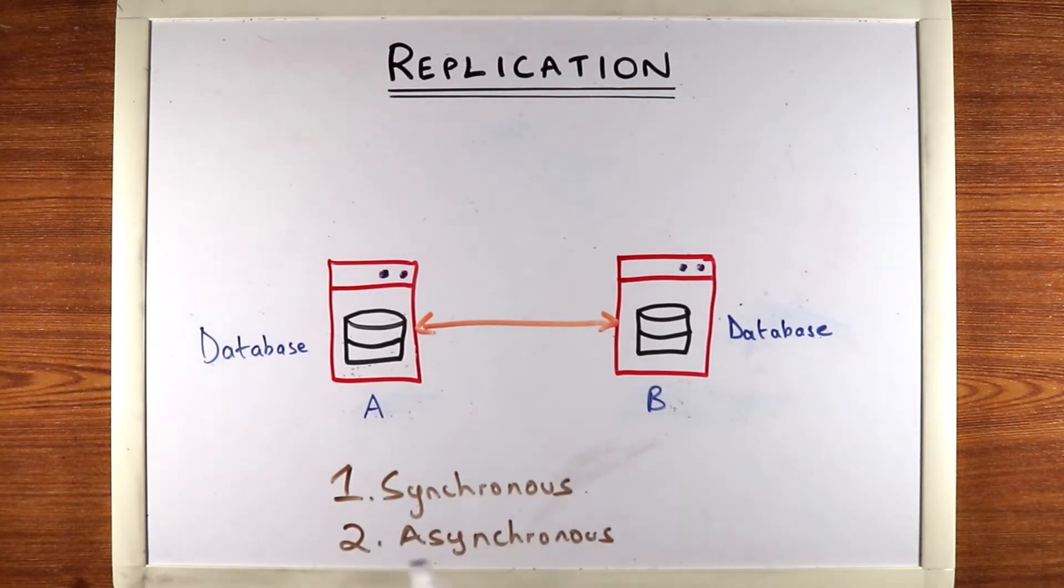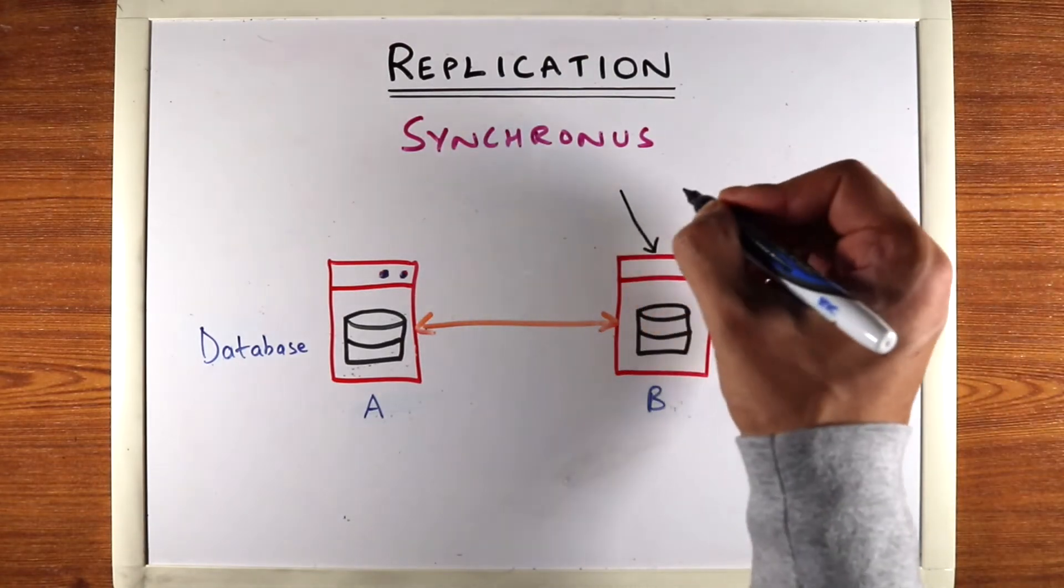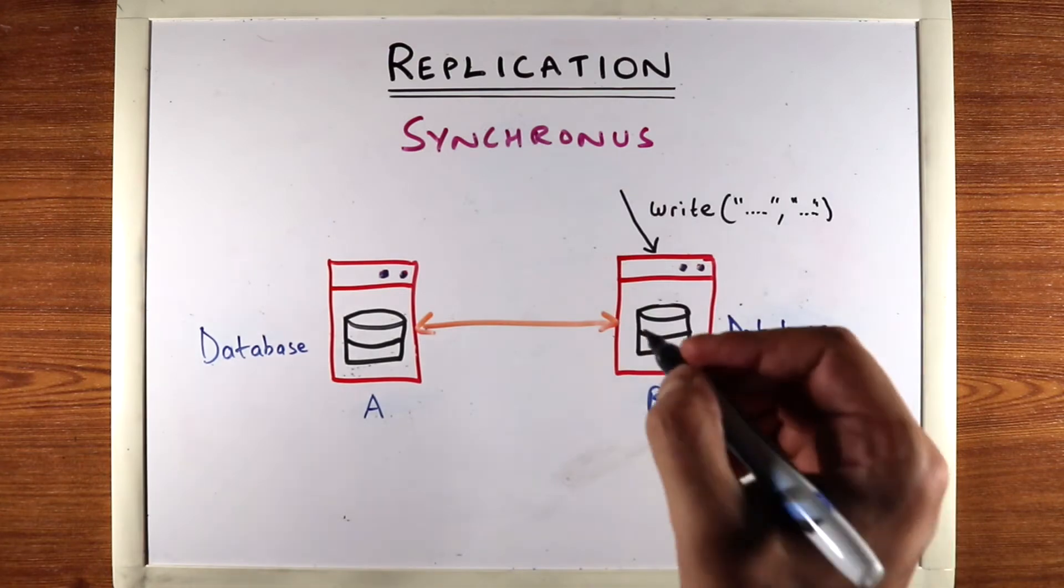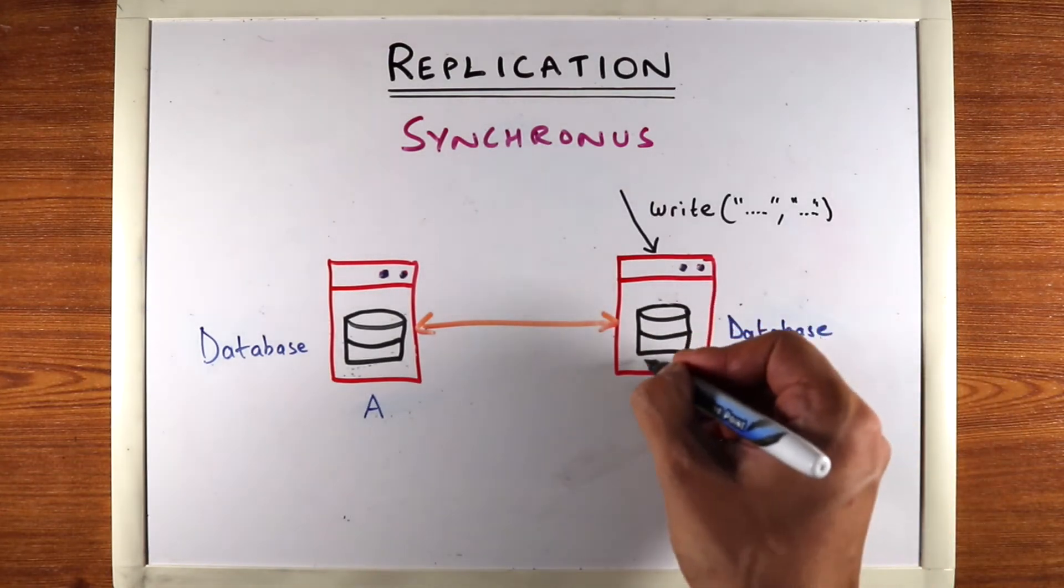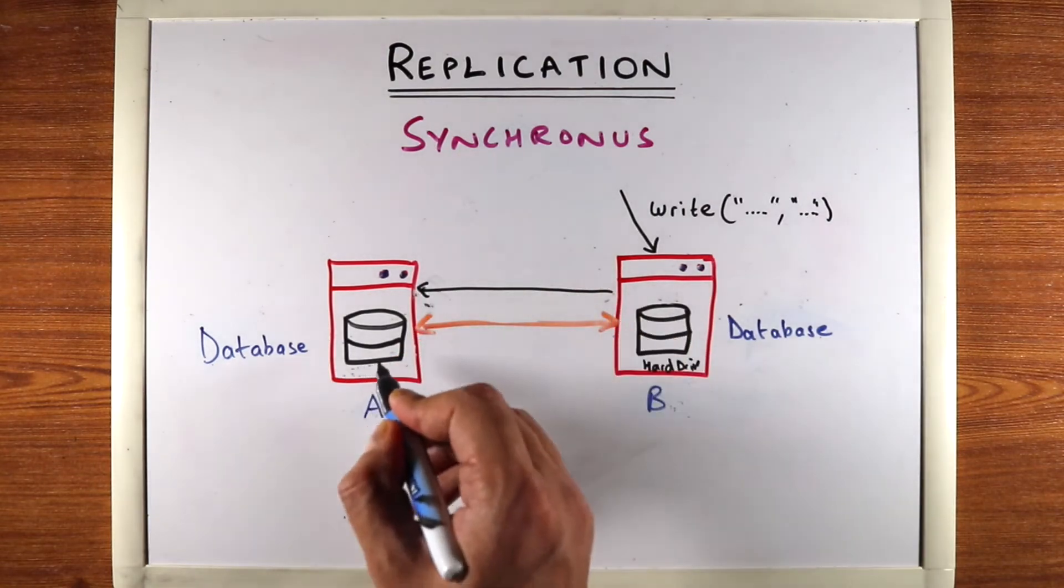Let's go over synchronous replication first. With synchronous replication, when you do a write, so let's say there's a write coming in here, database B will do the write on its own hard drive. This is a hard drive and it'll request database A to write it in its own hard drive as well.